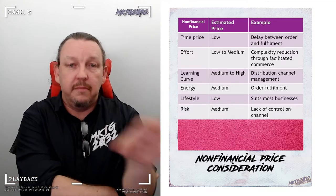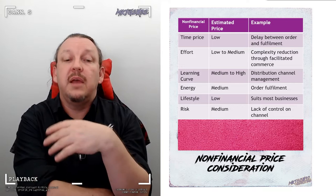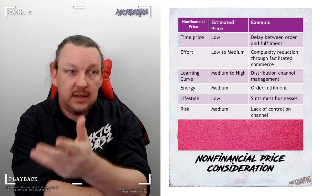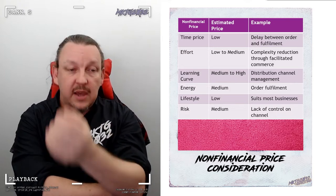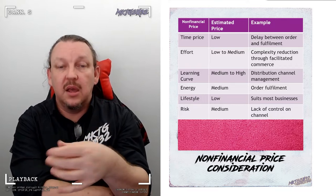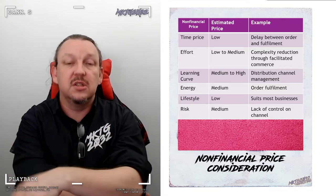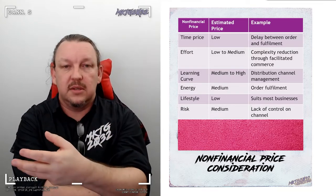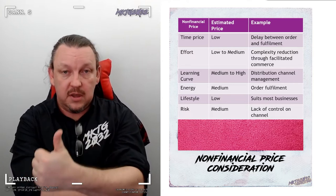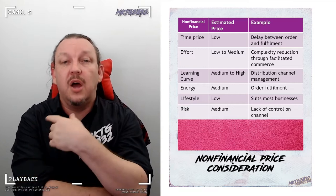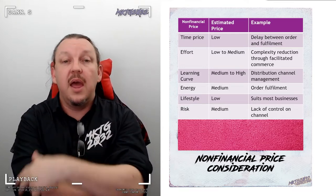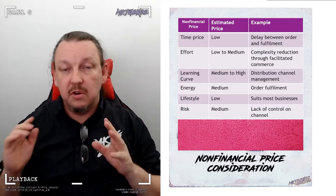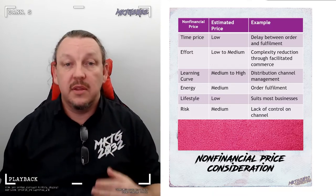There is a risk involved in being part of a channel because the channel can do something stupid and brand-damaging. Everyone using Substack found that when Substack aligned itself with fascists, if you weren't a fascist on Substack, there goes your brand and your marketplace. Every time Amazon does something horrific, every time Etsy bans content stupidly, every time a distribution channel harms its brand, it also harms the people attached to it. There is a risk when tying to an exclusivity channel that the channel could do something stupid.